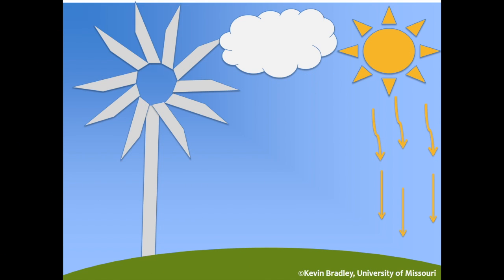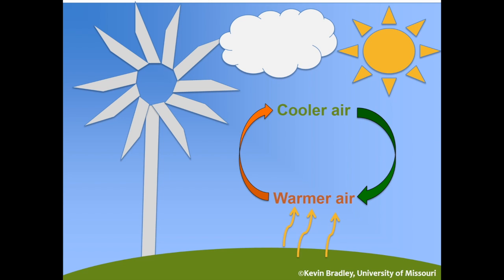On a typical day when there is no inversion present, the sun is shining and emitting energy to the earth. The earth's surface heats up and in turn emits radiation to its surroundings, including the air near it. That air warms, expands, and rises. Cooler, more dense air then settles in, gets warmed, expands, and rises — creating a constant shuffling of the air.